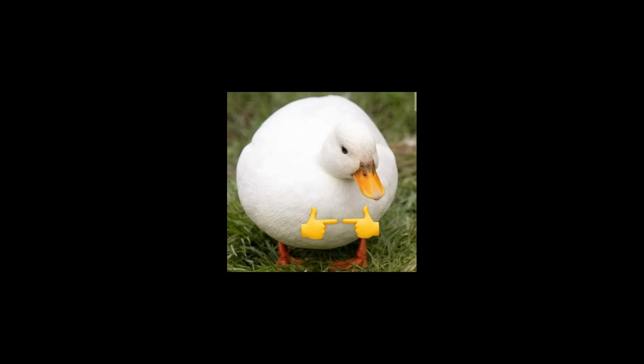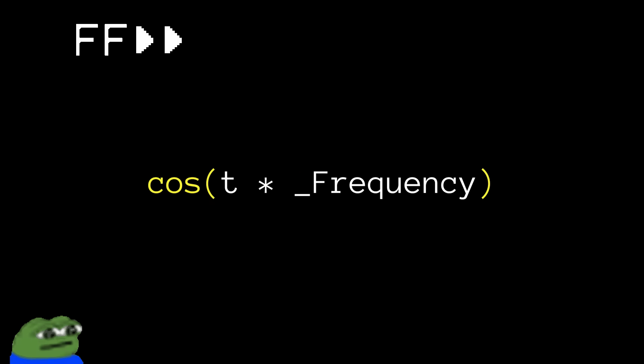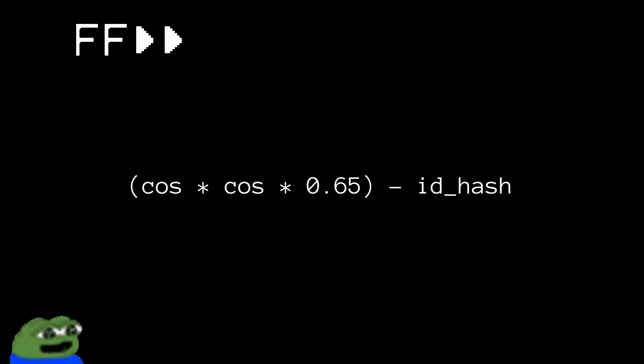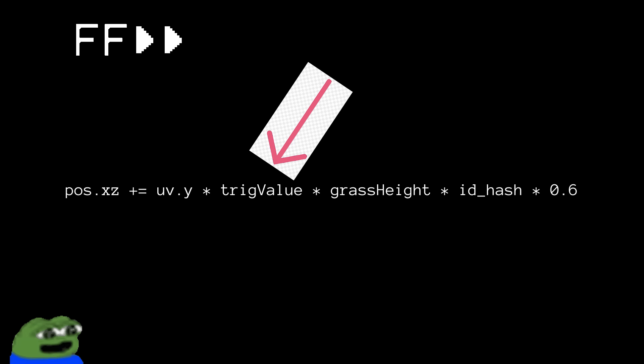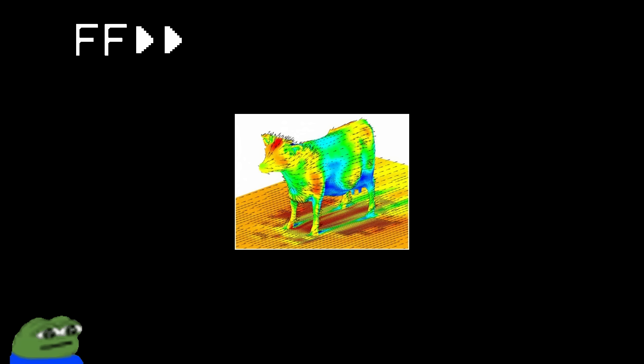To explain the animation: we hash the instance ID of the grass object to get a unique random number. If that hash value is above a certain threshold we compute the cosine value with a slightly faster frequency; otherwise we use the default cosine with a parameterized frequency, which is reduced on taller grass since taller grass takes longer to swing. We then square the cosine wave, reduce its amplitude, subtract based on the ID hash for local variance, and add this value to the local position of the top vertices — scaled by hash ID and height variance since taller grass sways further.